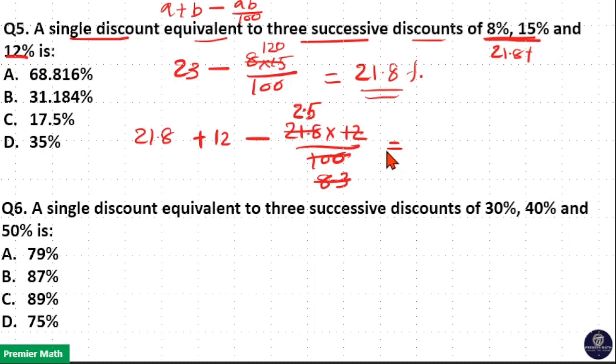Now this can be around 21.8 plus 12 is equal to 33.8. Now 33.8 minus 2.5 is around 31%. Now option B is your answer. Same way, a single discount equivalent to three successive discounts of 30%, 40%, and 50%.